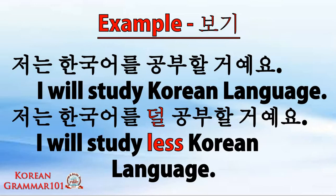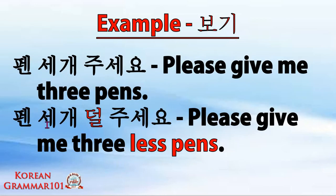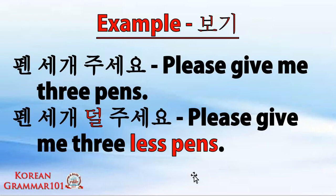And finally for our counter example: pen sege juiceyo — please give me three pens. How about the next: pen sege dol juiceyo. 'Sege' is three pieces, 'dol' means less, and 'juiceyo' means please give me — please give me three less pens. Maybe he already has many pens and he's asking for less, so he puts dol before the verb, meaning less of the thing.